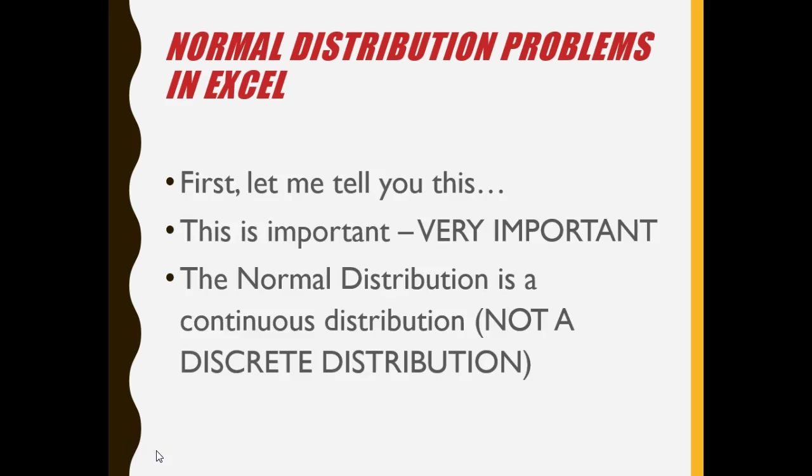First let me tell you this. This is very important. The normal distribution is a continuous distribution, not a discrete distribution. We looked at the binomial, the Poisson, the geometric where we had discrete distributions and we worried about less than, less than or equal to, greater than, greater than and equal to. With the normal distribution it's like cutting jello.